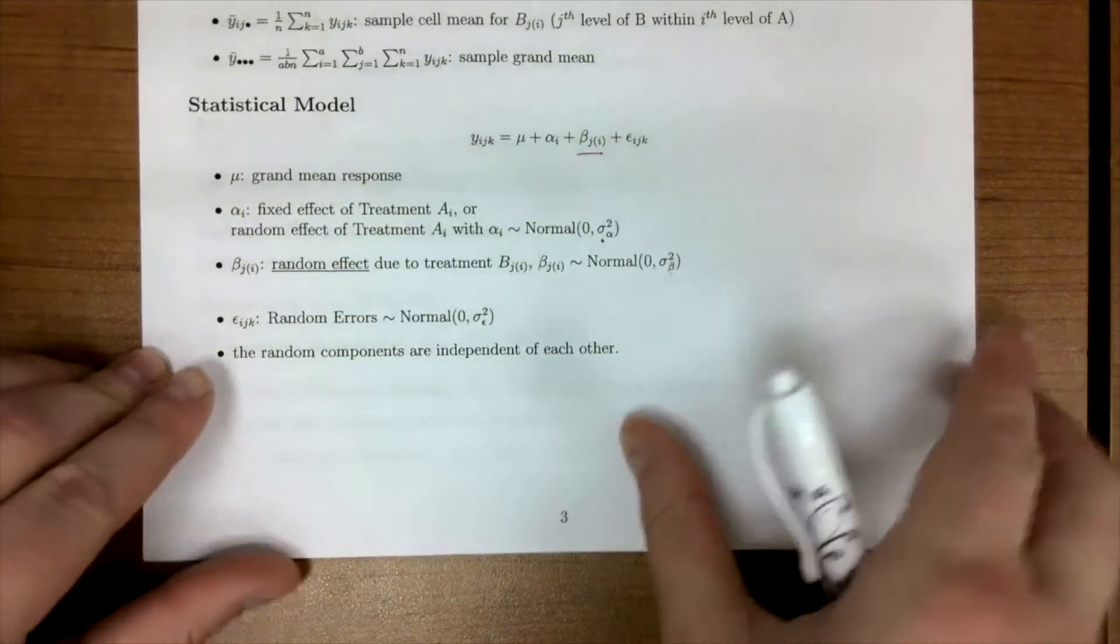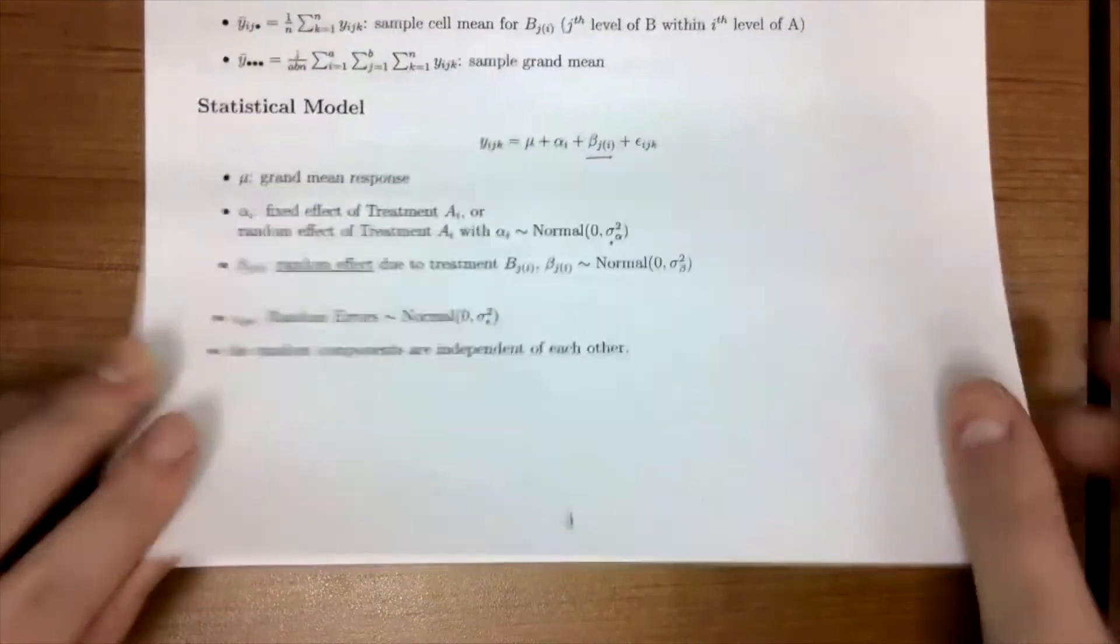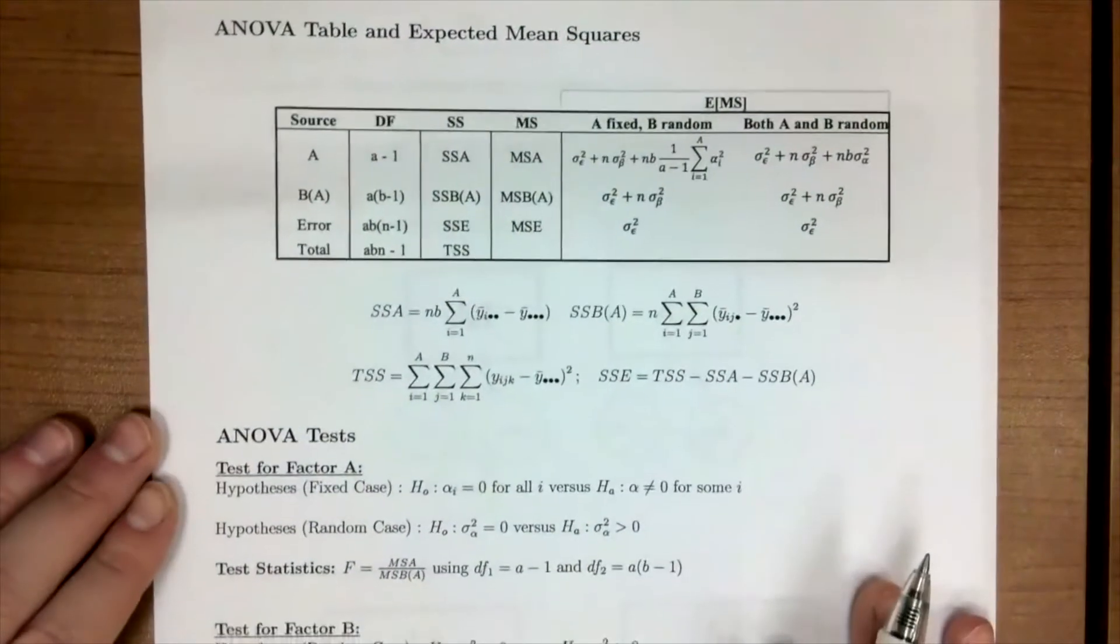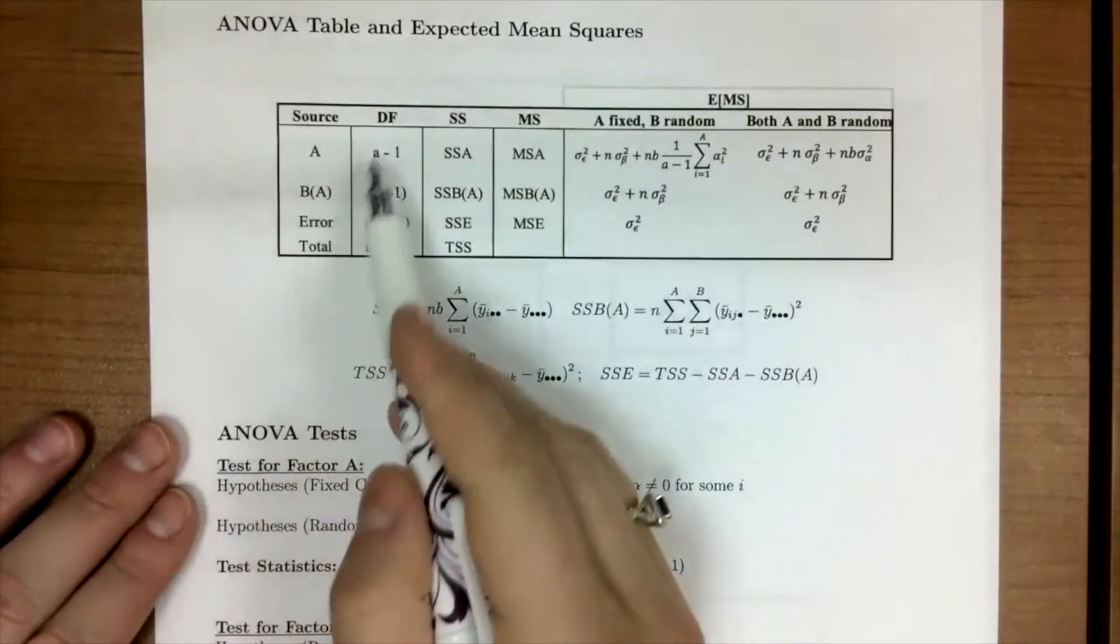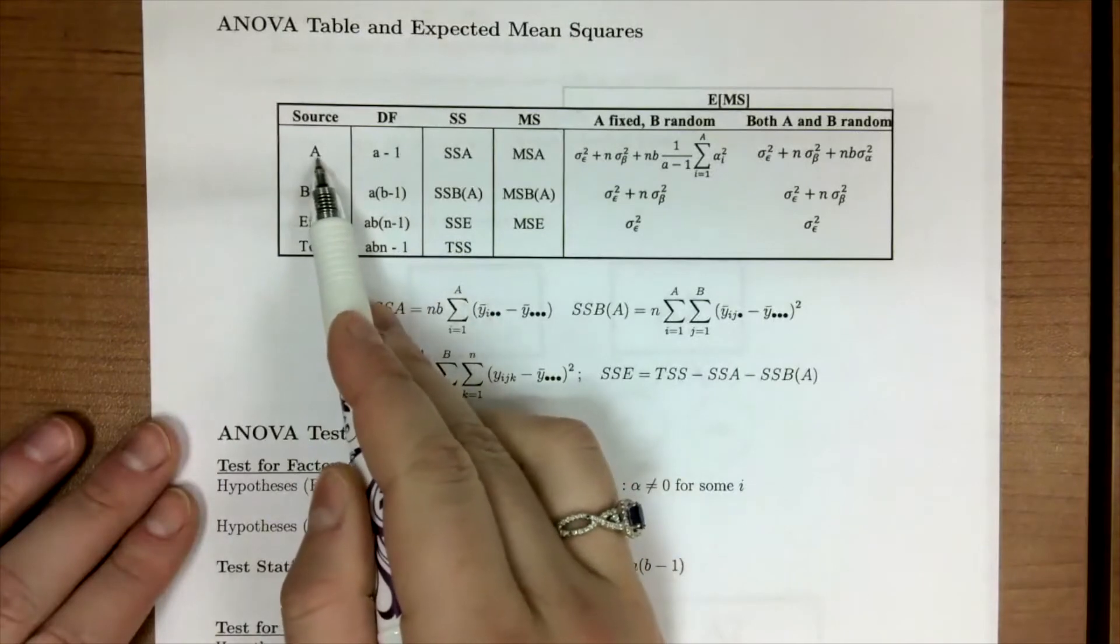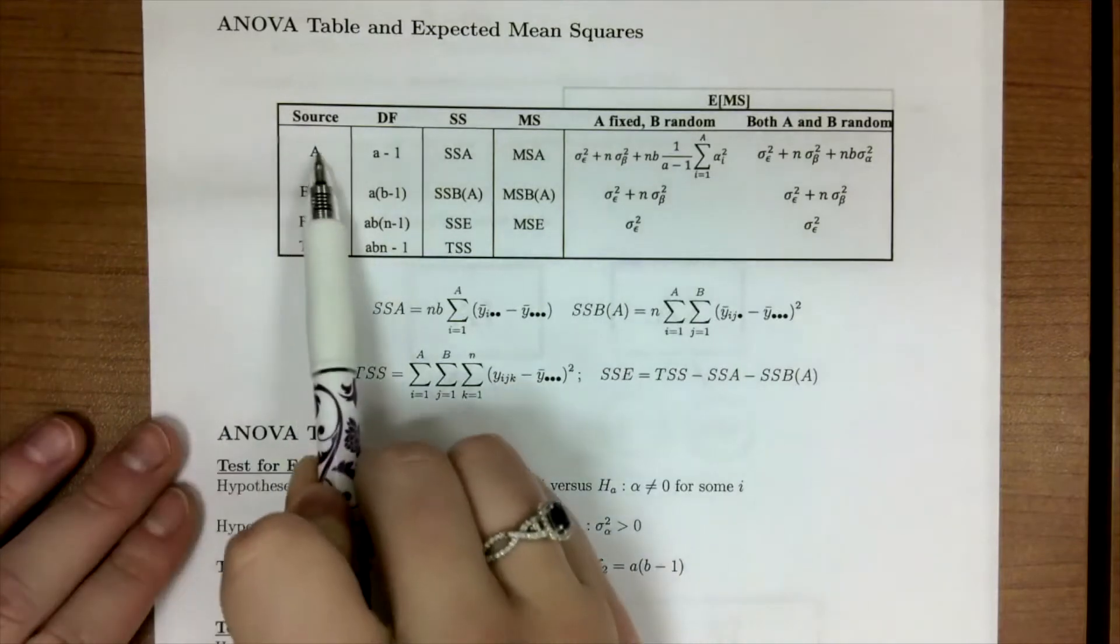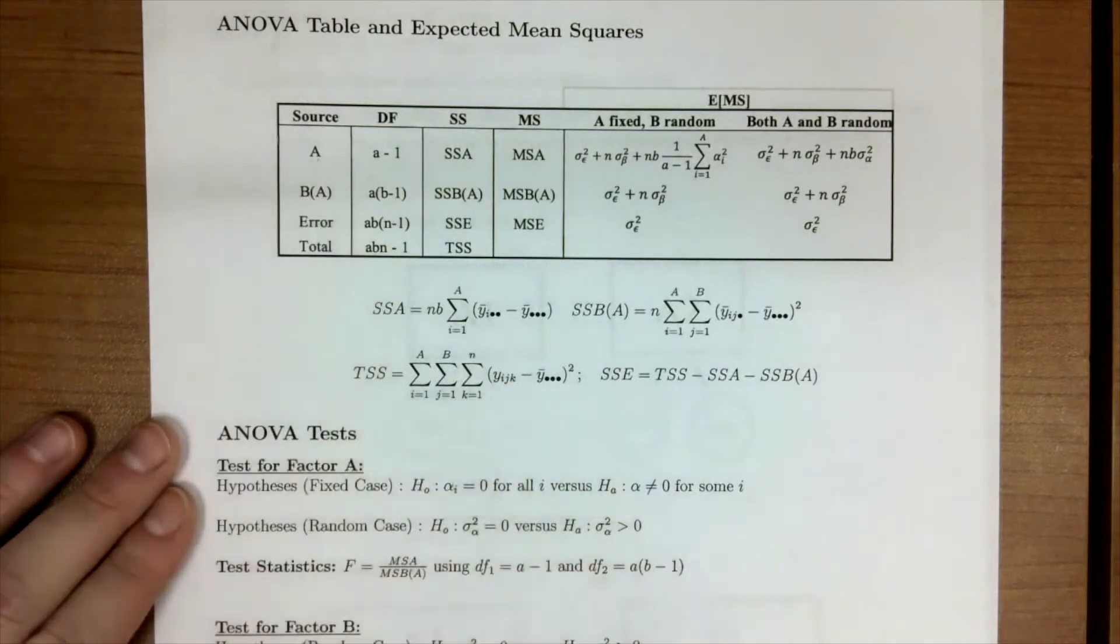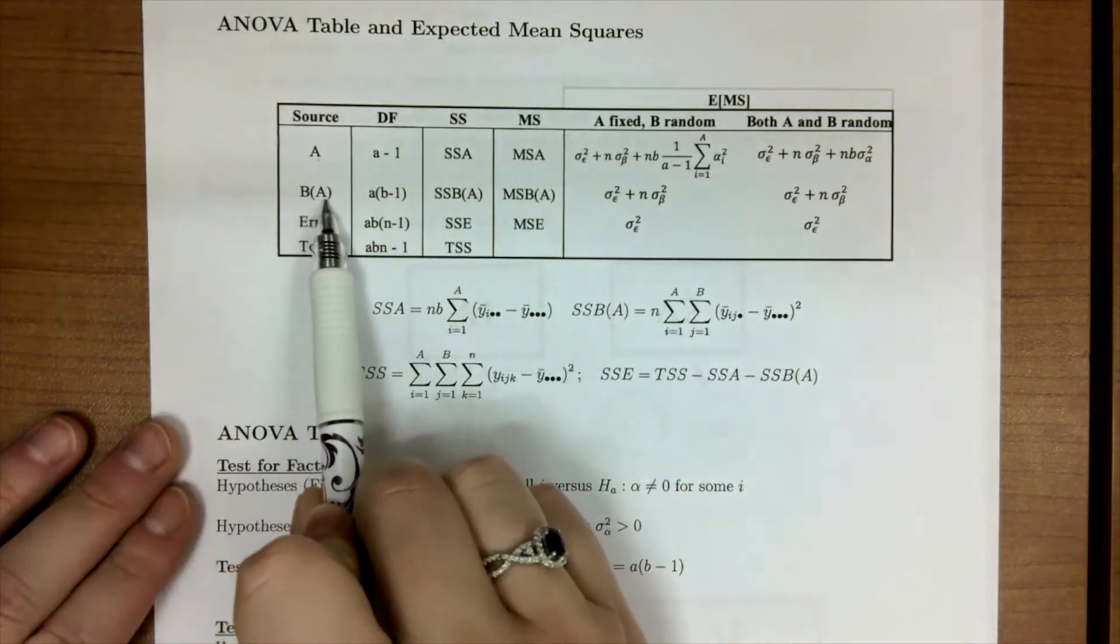So let's look at an ANOVA table to help us figure out how we would test in a nested design. So this is our partial ANOVA table where we have our A, which is our upper level. In the case of our machine head example, this would be the machine. And then we have B(A). This notation is just helping us to remind us that B is nested within A.